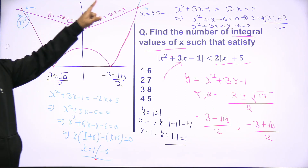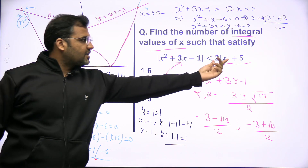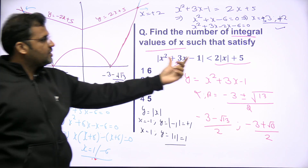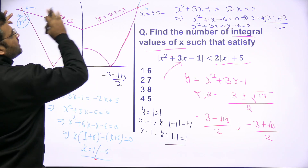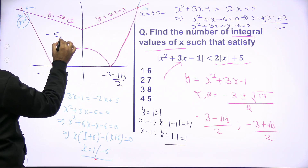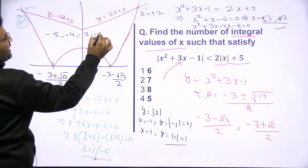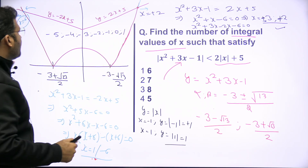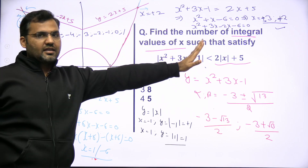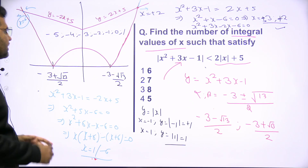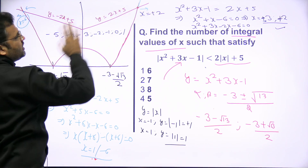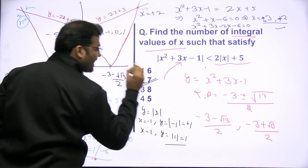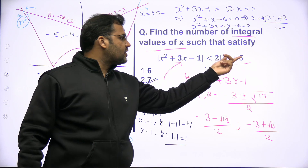So between x equals minus 6 and x equals plus 2, the right-hand side graph is above the left-hand side. How many integral values lie strictly between minus 6 and 2? They are: minus 5, minus 4, minus 3, minus 2, minus 1, 0, and 1. We do not include minus 6 and 2 themselves because the inequality is strict (less than, not equal). So there are 7 integral values of x.